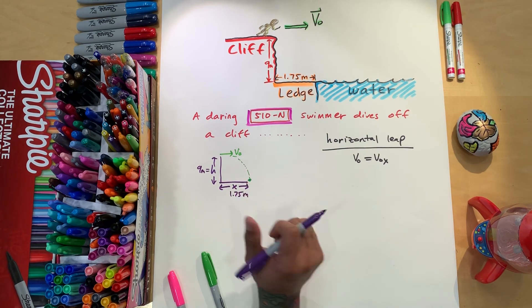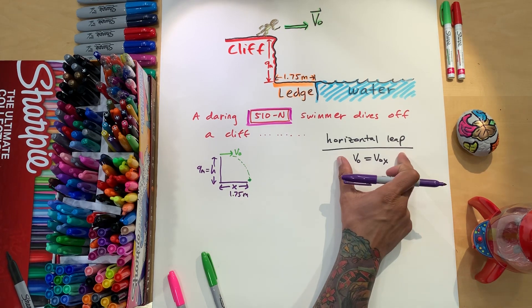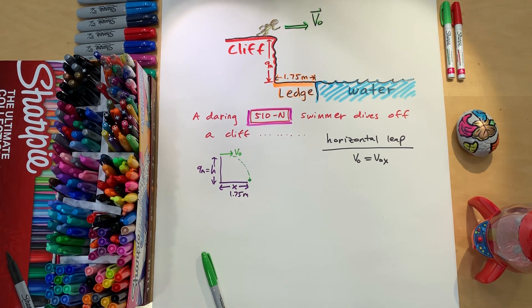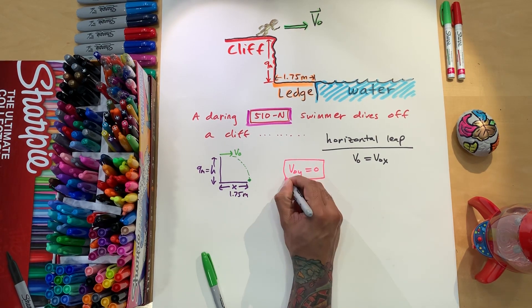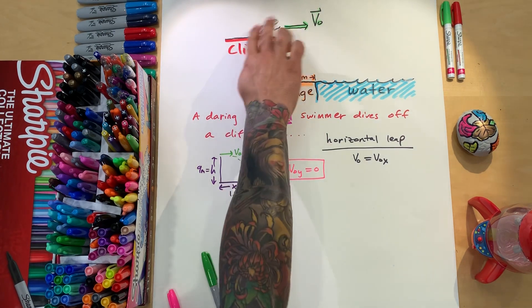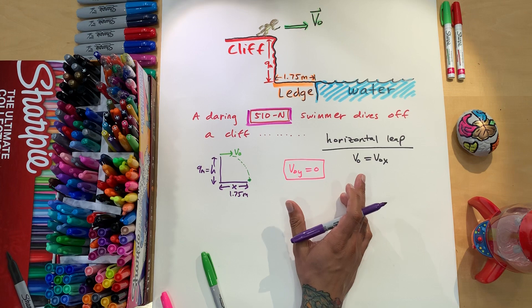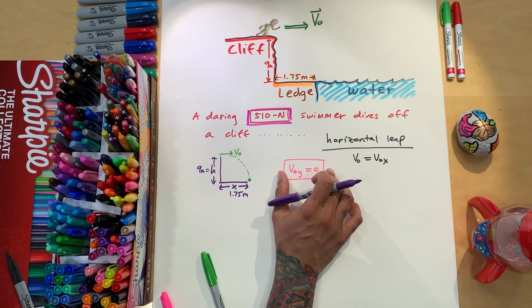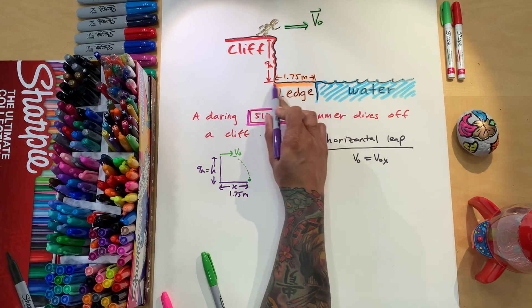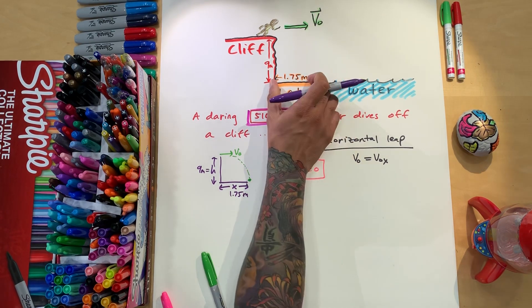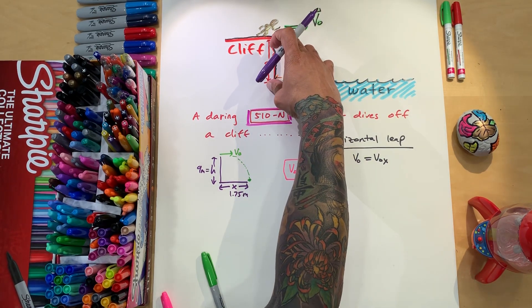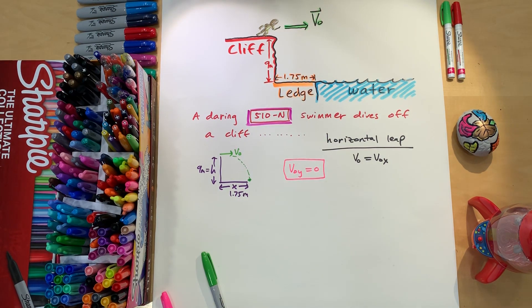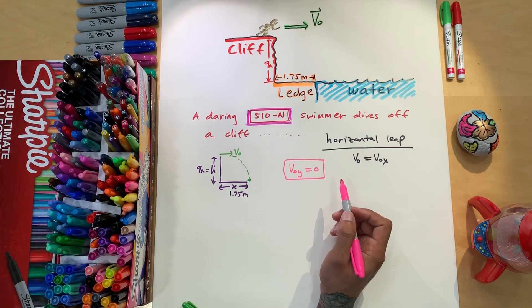So now this part here, horizontally, means that automatically I'm just going to write V initial in the Y is equal to 0. Okay, because he's running horizontally or she's running horizontally. And now I want to clear a distance right here. And I know this number, which is horizontal. And I know this number, which is vertical. So if I didn't know any better, let's just write down two equations that I could possibly use for those problems, okay?